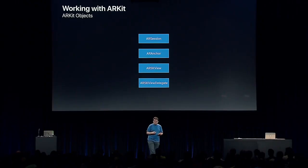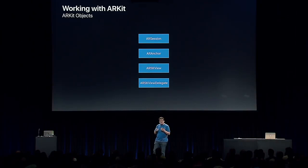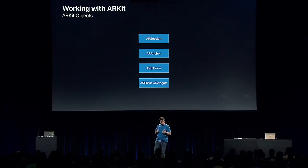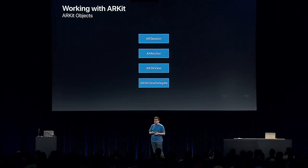Now that we've shown how ARKit and SpriteKit work together conceptually, let's talk about the actual objects you'll need to implement your app. To work with ARKit and SpriteKit, there are four important objects: ARSession, ARAnchor, ARSKView, and ARSKViewDelegate.